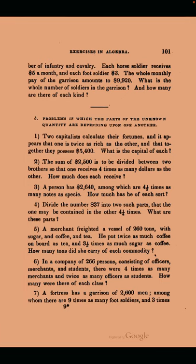'Two capitalists calculate their fortunes, and it appears that one is twice as rich as the other, and that together they possess fifty-four hundred dollars. 1833, y'all. What is the capital of each?' Jaunty maritime problems are always fun. 'A merchant freighted a vessel of two hundred and sixty tons with sugar, coffee, and tea. He put twice as much coffee on board as tea, and three and a half times as much sugar as coffee. How many tons did she carry of each commodity?' Actually, this one's kind of dark when you think about it, because 1833 was during the time when people were enslaved in North America and the Caribbean. That sugar was probably harvested by enslaved Africans.